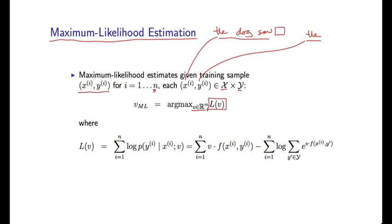So L of v is going to be a function that takes a parameter vector as input and returns some value, which is basically going to be a measure of how well those parameters fit the data. More precisely, it's going to be the log likelihood of the data under the parameters.